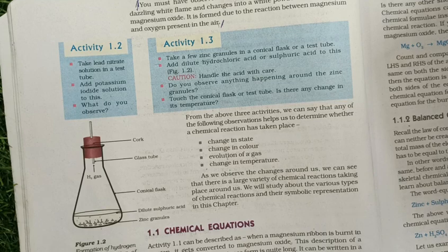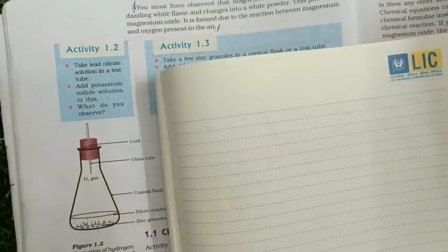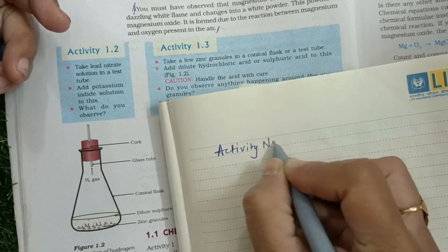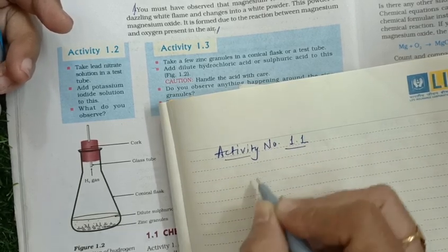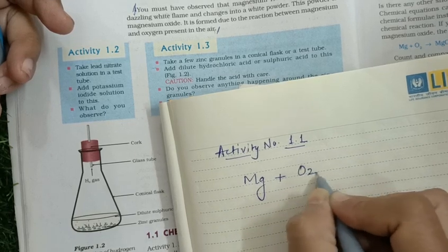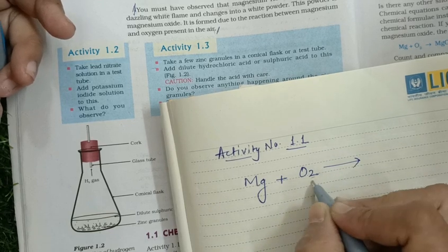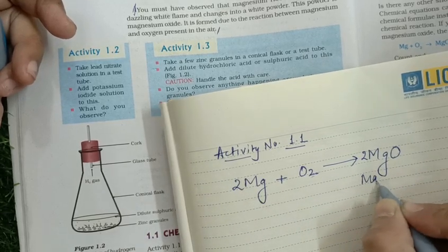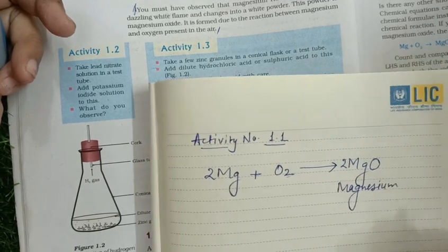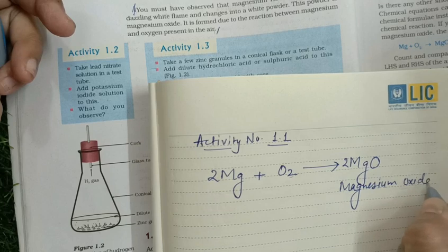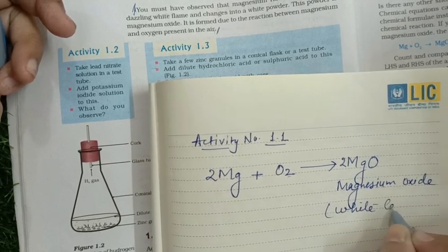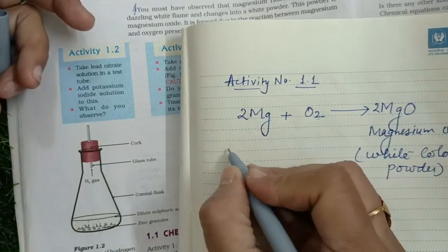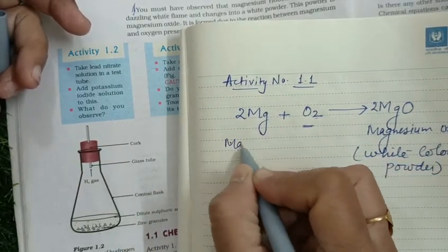Now I will show you Activities 1.1, 1.2, and 1.3 — what is actually chemical change and what is happening. Activity 1.1: magnesium ribbon is burned in the presence of O2, so the product formed is MgO — magnesium oxide. This is a white color powder. Mg is the magnesium metal and O2 is the oxygen gas.